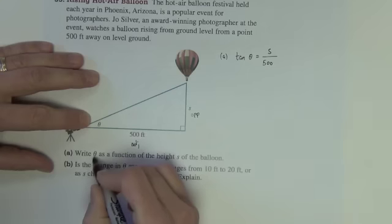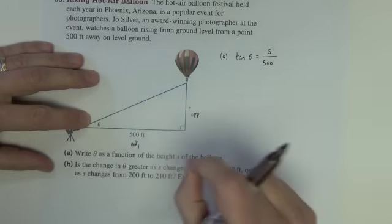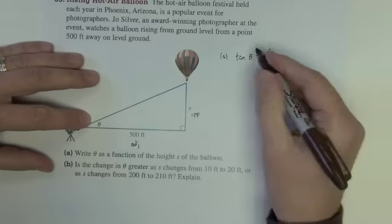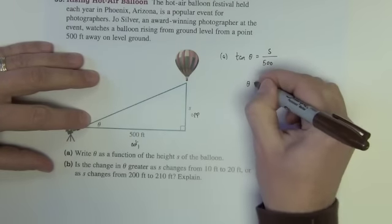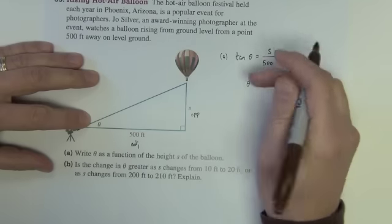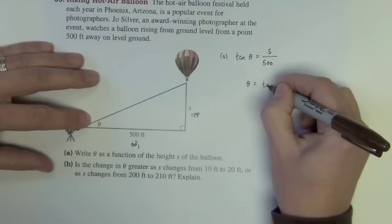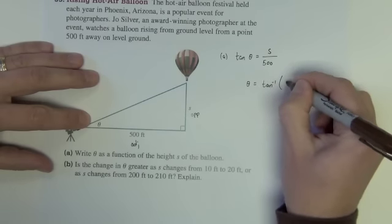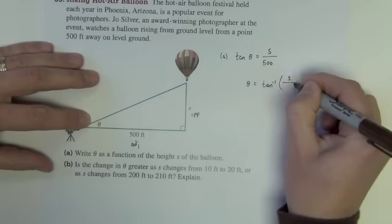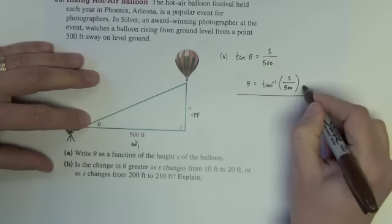Now that's not theta as a function of S. Theta as a function of S would say theta equals, not tan theta equals. So to write it as theta equals, we need to move the tangent to this side and we move functions by doing their inverse. So theta equals tan inverse of S over 500. There's your answer to part A.